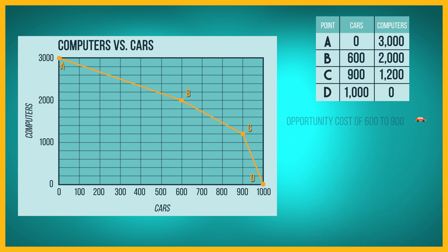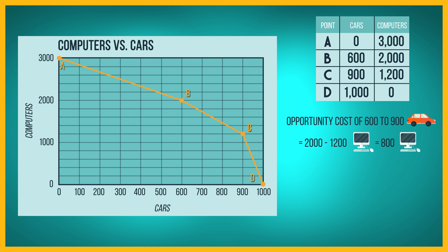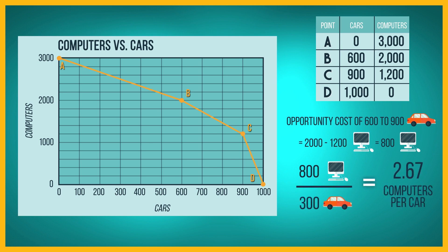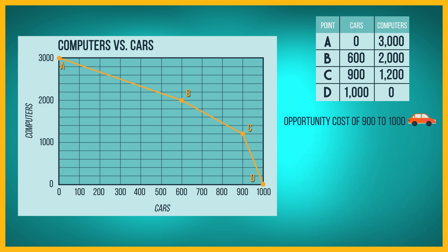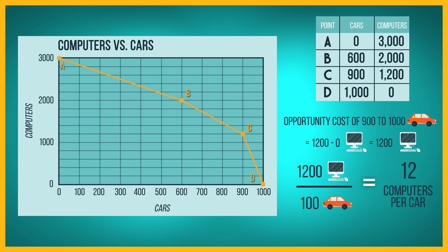The opportunity cost of increasing the number of cars from 600 to 900 is 2,000 computers minus 1,200 computers, or 800 computers. The opportunity cost per car as the number of cars increases from 600 to 900 is 800 computers divided by 300 cars, or 2.67 computers per car. The opportunity cost of increasing the number of cars from 900 to 1,000 is 1,200 computers. The opportunity cost of each extra car as the number of cars increases from 900 to 1,000 is 1,200 computers divided by 100 cars, or 12 computers per car.